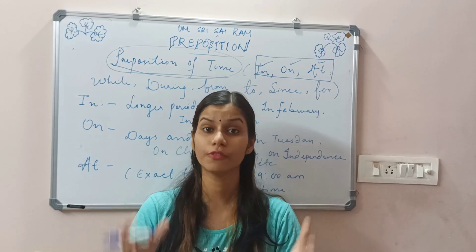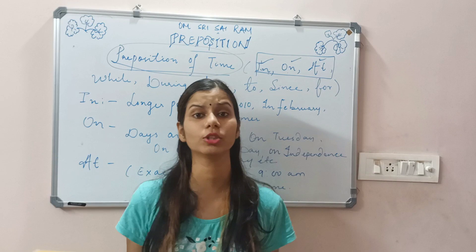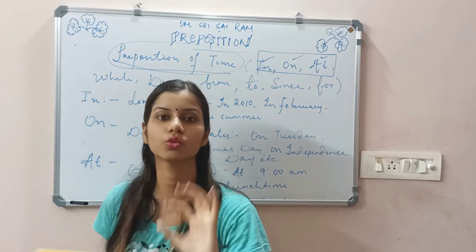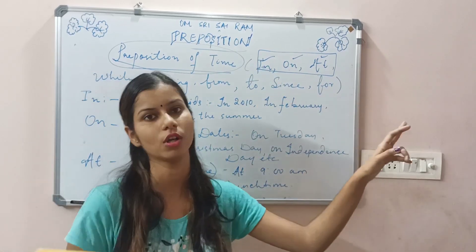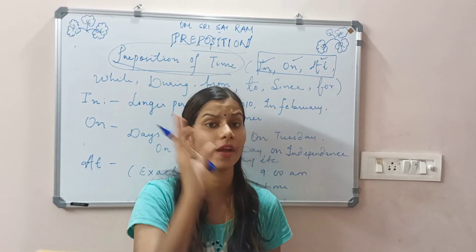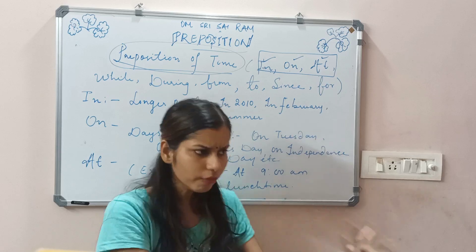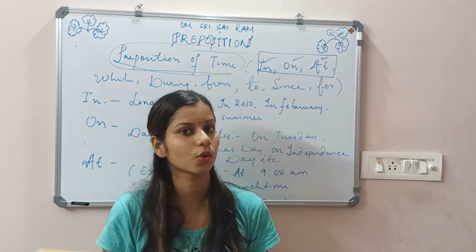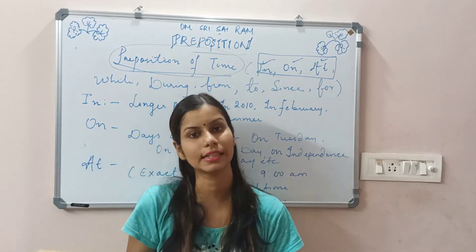We will begin with the first type of preposition, and that is preposition of time. It denotes before an object or a person, and time ke baare mein kuch words use hote hain: in, on, at, while, during, from, to, since, for. All these words we use as prepositions of time. But yaad rakhna dosto ki sometimes all these words are also used for place or movement — never mismatch them. We have to learn very carefully regarding these prepositions.